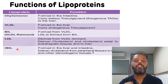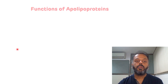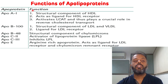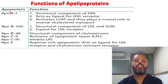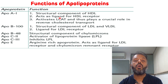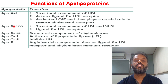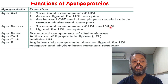Now the functions of apolipoproteins. APOA1 is the structural component of HDL, the good cholesterol. It acts as a ligand for the HDL receptor, activates the lecithin cholesterol acyltransferase enzyme, and plays a crucial role in reverse cholesterol transport. APOB100 is the structural component of LDL and VLDL, and acts as a ligand for the LDL receptor.